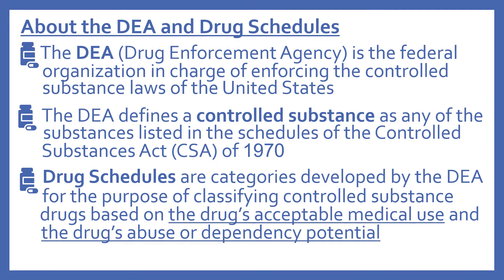So first we'll begin with some information about the DEA in general and drug schedules. The DEA, which stands for Drug Enforcement Agency, is the federal organization in charge of enforcing the controlled substance laws of the United States. The DEA defines a controlled substance as any of the substances listed in the schedules of the Controlled Substance Act, or CSA, of 1970. Drug schedules are categories developed by the DEA for the purpose of classifying controlled substance drugs based on the drug's acceptable medical use and the drug's abuse or dependency potential.